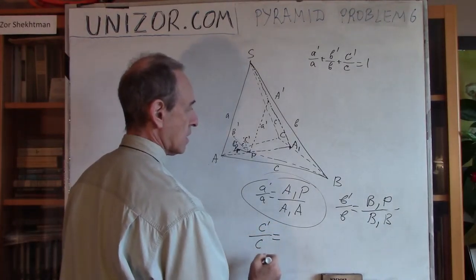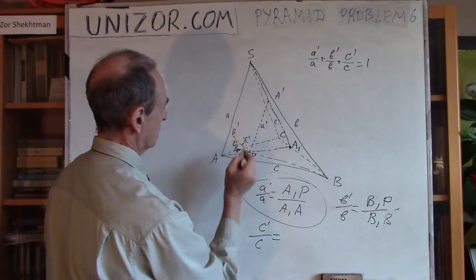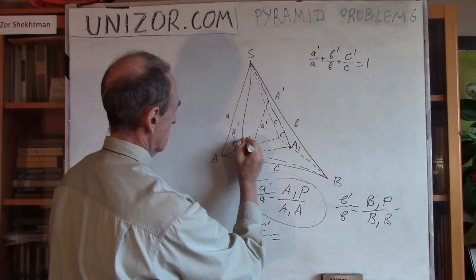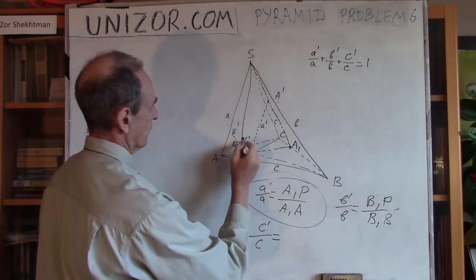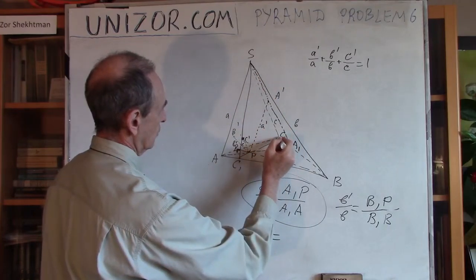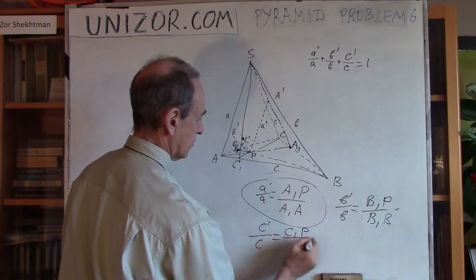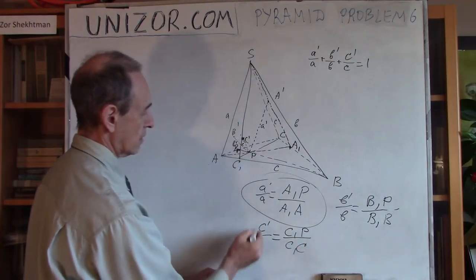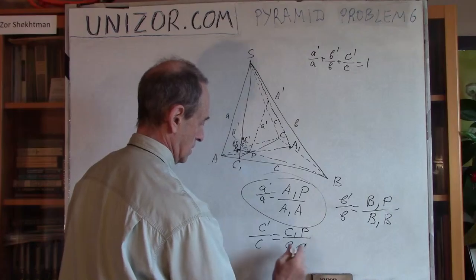And the same thing for the C. C prime divided by c is equal to C1P divided by C1C. This is lowercase c, by the way. This is uppercase C. Because these are lengths and these are letters.